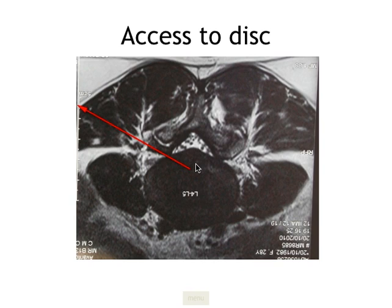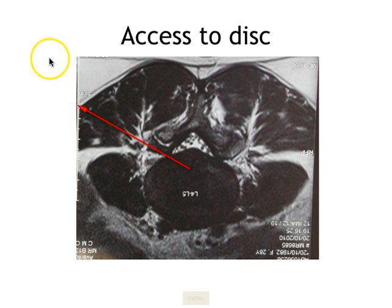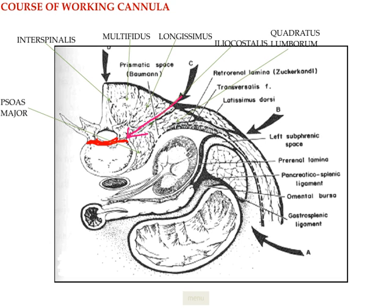The patient's symptoms were more on the left side, so we are going to access this from the left side. The red line indicates the axis we are going to take: paraspinal, going about 10 centimeters from the midline, below the facet, landing in the center of the disc to remove the fragment. As a matter of concept, we are not going to be transperitoneal, retroperitoneal, or posterior midline — we are going to be transforaminal, which is paraspinal, intramuscular, retroperitoneal, and transforaminal below the facet.